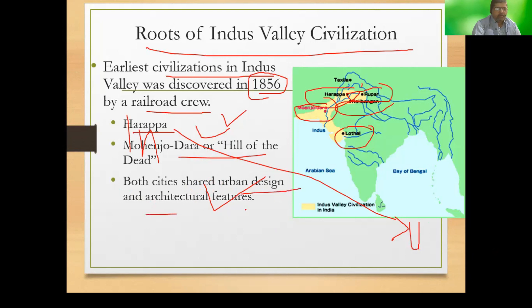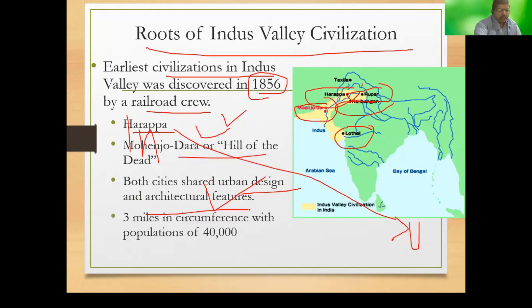The architectural remains indicate that this civilization had significant standards and reputation. A circumference of approximately three miles was reported, with an estimated population of around 40,000 people at the city. This is based on assumptions given by historians, as stated through records and references.